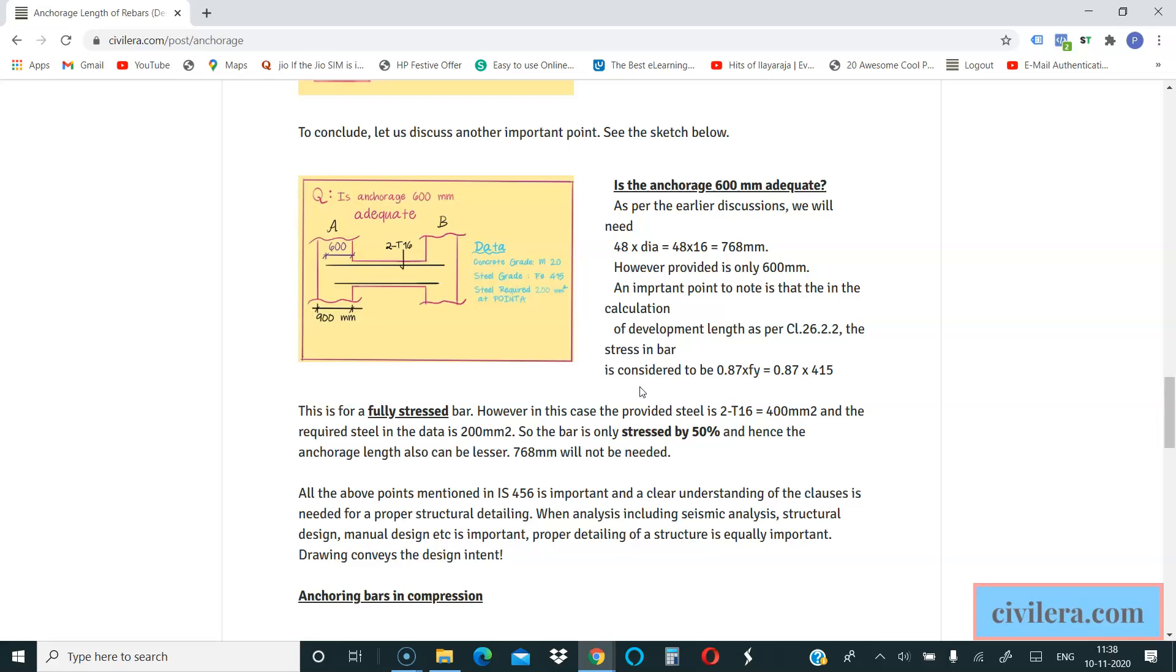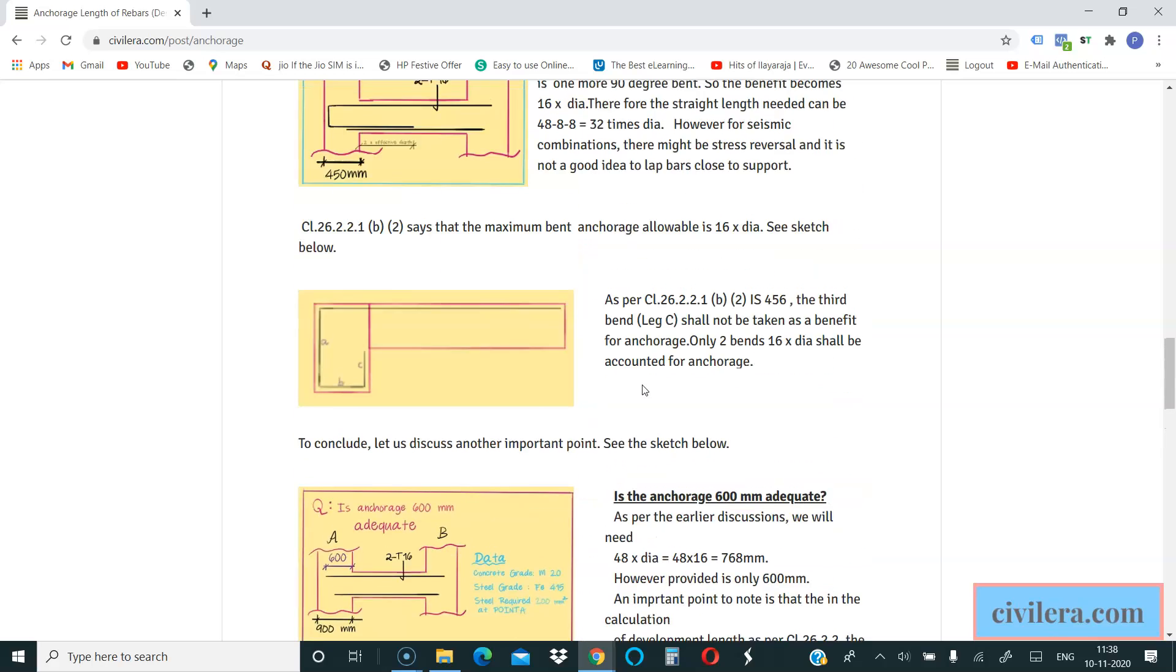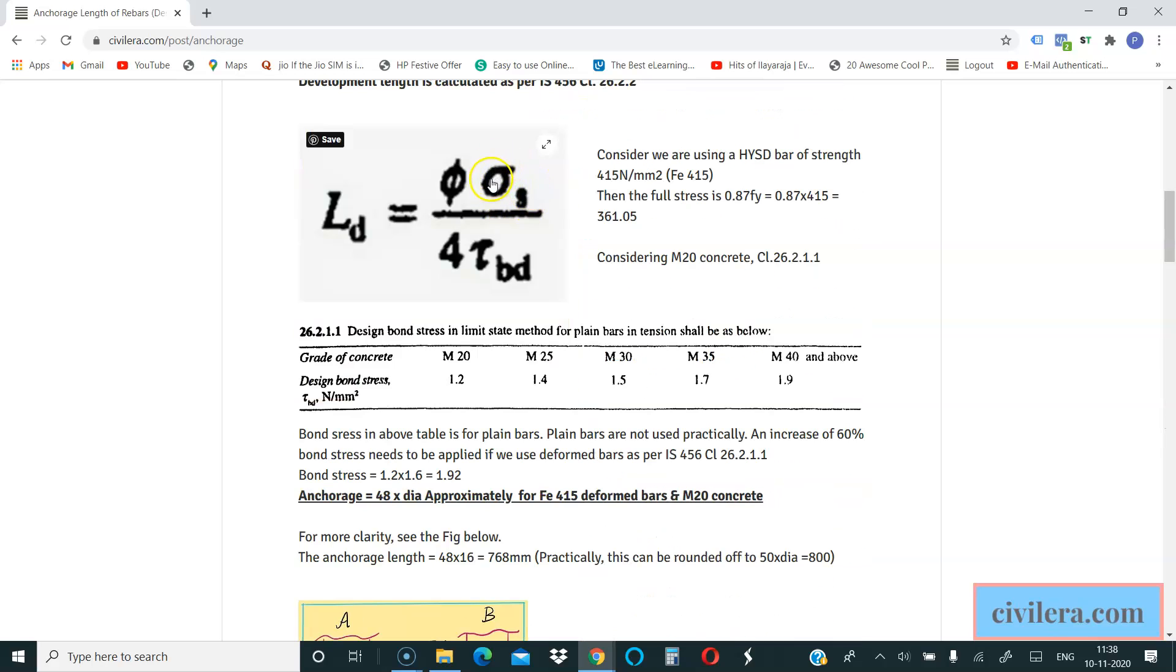Which means it is not fully stressed. Your stress in the rebar is not 415 because you have a margin there. It is less stressed. So you can work out that based on what is required and what is provided and proportionately reduce the stress in your rebar, which means your sigma s is lesser than actual 415 because you have more steel. More steel means less stress in your rebars. So your development length automatically comes down.